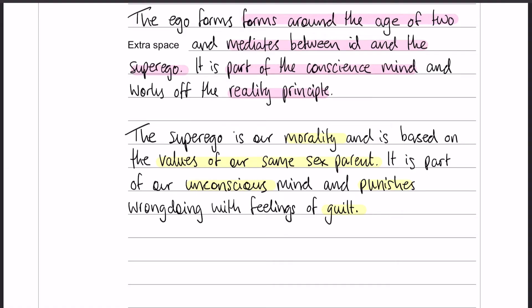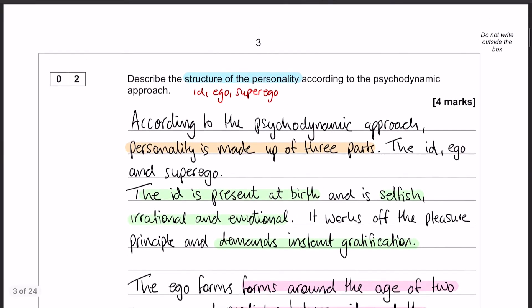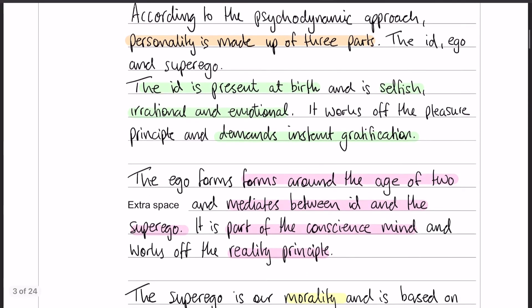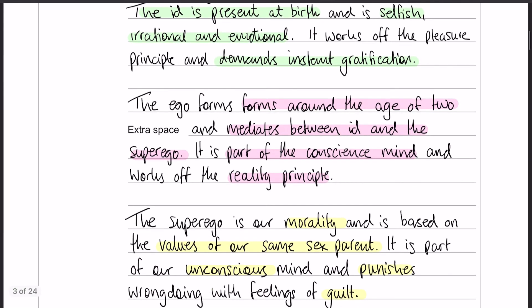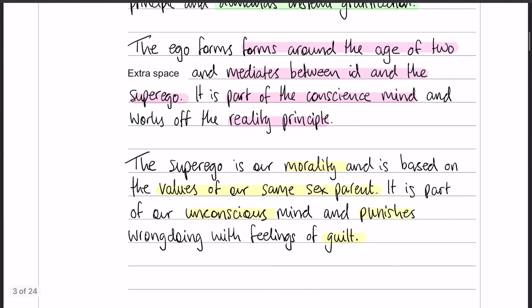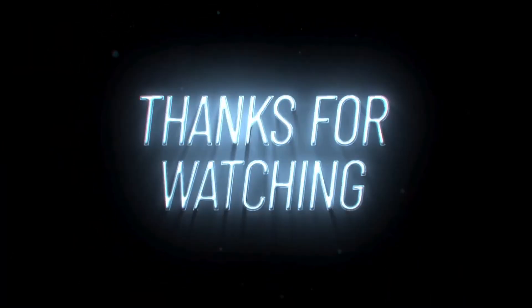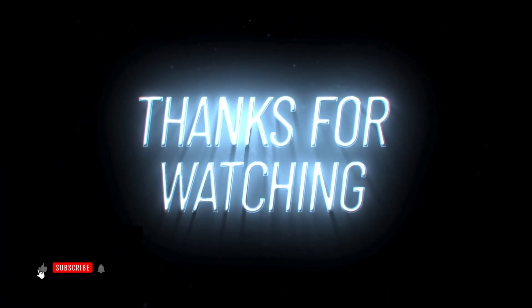There's a lot of detail you could include for the psychodynamic approach. As it stands, we have the structure of personality as a tripartite, and then we have the id, the ego, and the superego. I hope that's made sense — I'll see you in question number three.